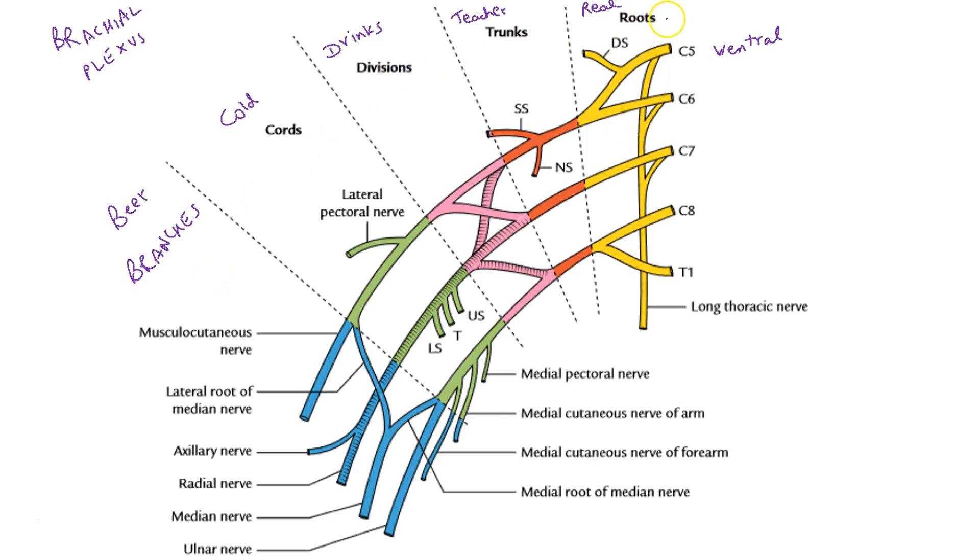In certain cases, C4 gives a major contribution to the brachial plexus and in that case it is said to be prefixed. Whereas if a major contribution comes from T2, then it is said to be postfixed.